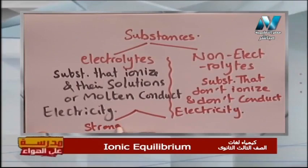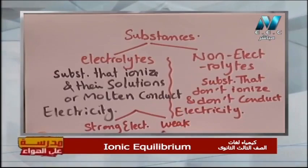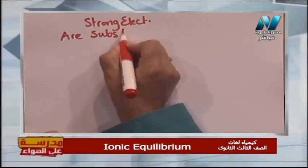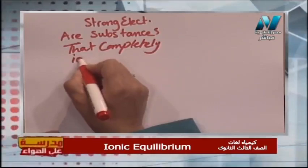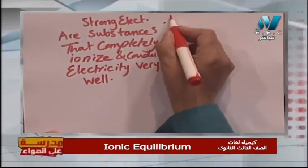Electrolytes may be strong electrolytes or weak electrolytes. Strong electrolytes are substances that completely ionize and conduct electricity very well. For example, hydrochloric acid in water ionizes giving H⁺ and Cl⁻. If we start with 10 moles of HCl, they will become 10 H⁺ and 10 Cl⁻, so 10 moles yield 10 moles of each ion.